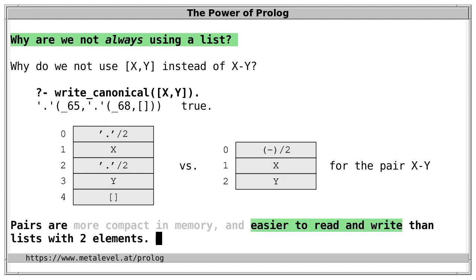The fact that pairs are easier to read and write is the compelling part of the argument. Because we always aim for readability and elegance of our code, and if the result isn't as efficient as we'd like, then it's first and foremost the Prolog system that must be improved.